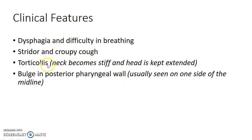Torticollis can be present — that is, the neck becomes stiff and the head is kept extended. A bulge in the posterior pharyngeal wall can be seen, usually on one side of the midline.